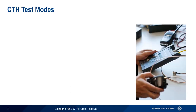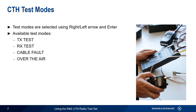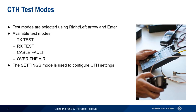The functions of the CTH are organized into so-called test modes, selected using the right and left navigation arrows and the Enter key. The available test modes are Transmitter Test, Receiver Test, Cable Fault — which includes Distance to Fault and Cable Length — and Over the Air. There is also a Settings mode, which is used to configure the CTH settings, both for the instrument itself and for the different measurement modes.